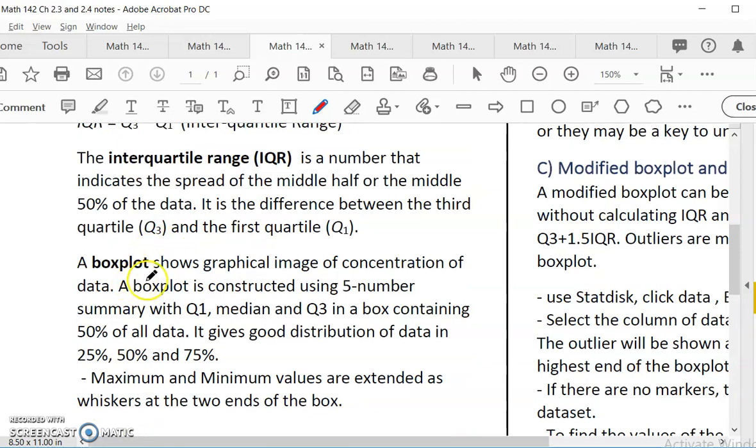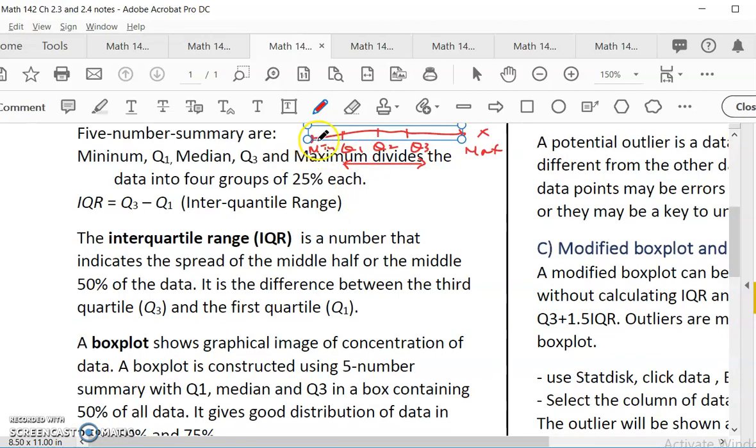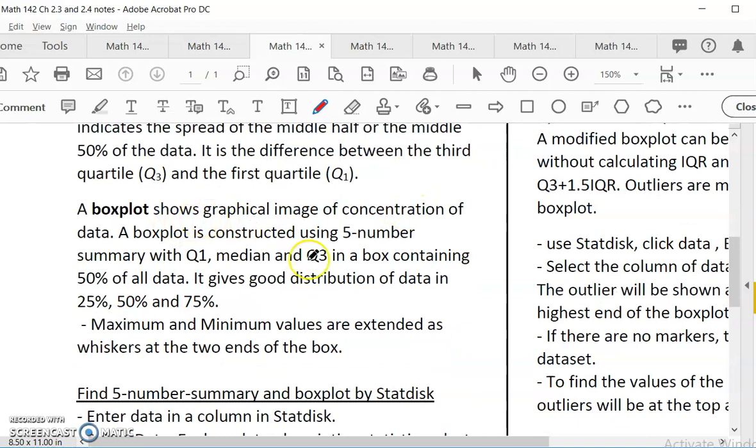A box plot shows graphical. Another thing that we can do is called a box plot. If we want to show how data are spread out, instead of writing like 25%, 25%, we use a box to show the middle 50% and two whiskers to show the first 25% and the last 25%.